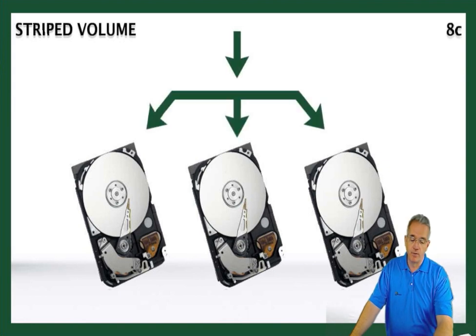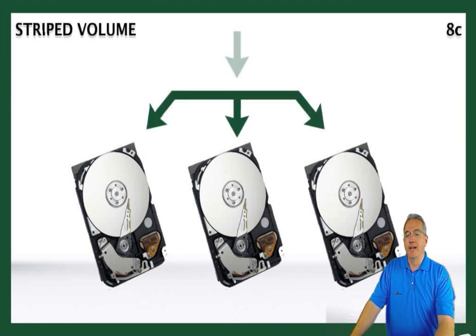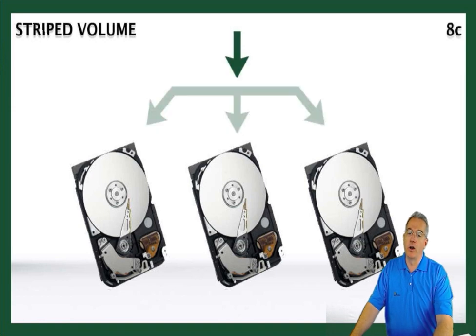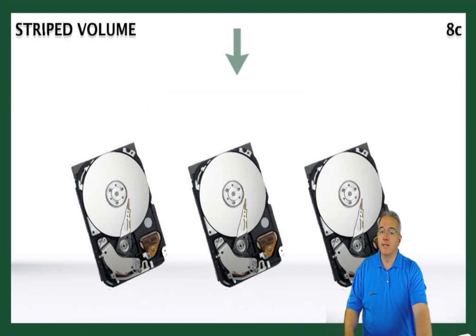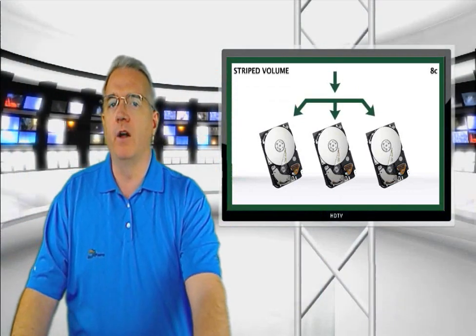So this is a good solution. The only problem with a striped solution is that there is no fault tolerance — in fact, it is more fault intolerant. If I lose just one of those drives, I am no longer able to read any of the information because it can't be recalculated. It stripes the information across all drives, and if I take the middle part out, I can't read the data. So we want to move into something that's a little bit more fault tolerant.